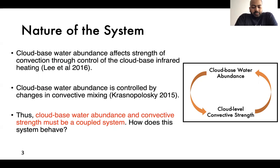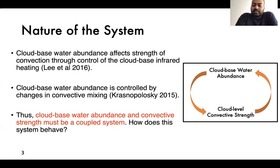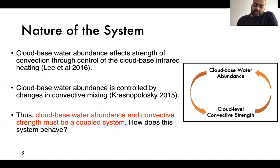These two studies are linked, because the cloud-base water abundance influences the strength of the cloud-level convective strength and vice versa. This is the coupled system that could be causing this variability, and we want to try to understand how the system works.